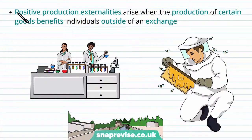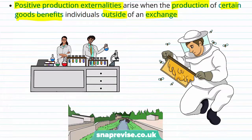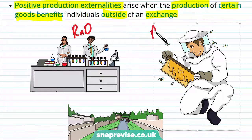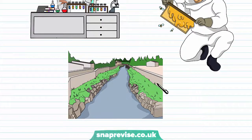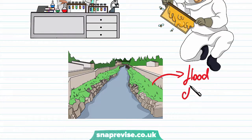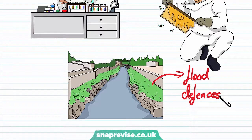Positive production externalities arise when the production of certain goods benefits individuals outside of an exchange. We've already thought about R&D and how innovation benefits others in society. Another example is beehives — the production of honey benefits the environment in terms of biodiversity and pollination. Finally, investment in infrastructure such as flood defences protects nearby properties, making residents feel safer and likely securing the value of their property as well.